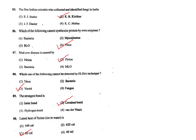Q87. Mad cow disease is caused by prions. The correct answer is option 2.